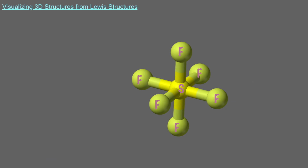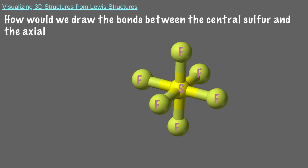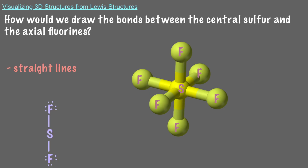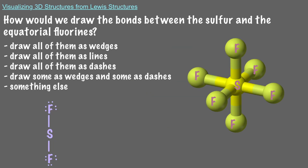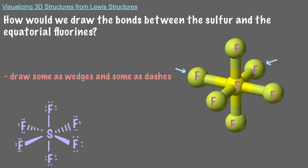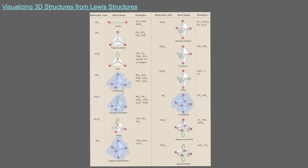Now let's explore how we represent this molecule in two dimensions. Since the axial atoms are in the plane of the screen, we use straight lines coming out of the central sulfur to represent the axial fluorines. Two of the equatorial fluorines are coming out of the screen, so we draw those as wedges. Since the other two are going back into the screen, we draw those as dashes. While these are only a few of the 3D shapes you have learned, the wedge and dash method applies for all of them. It's important to understand this method and visualize it in 3D so you can understand the overall structure of different molecules.